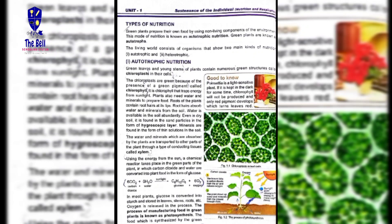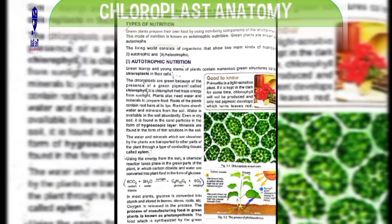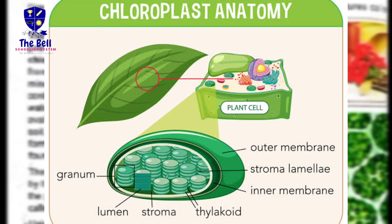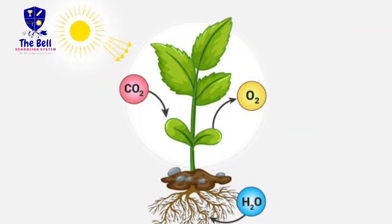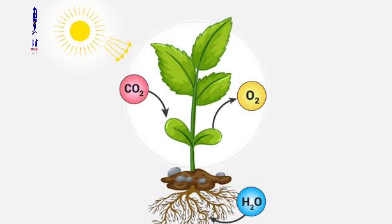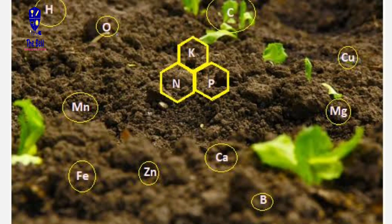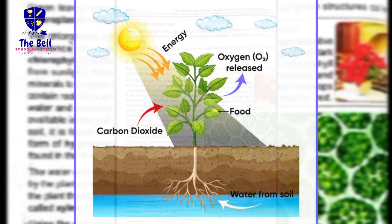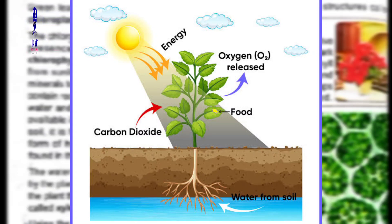Green leaves and stem of plants contain numerous green structures called chloroplasts in their cells. Chloroplasts are green because of the presence of the green pigment called chlorophyll. It is chlorophyll that traps energy from sunlight. Plants also need water and minerals to prepare food. The roots of plants contain root hairs at the tips which absorb water and minerals from the soil. Plants میں بہت سارے chloroplasts ہوتے ہیں جن کی وجہ سے plants کو green color ملتا ہے، اور ان کے اندر chlorophyll نامی chemical ہوتا ہے۔